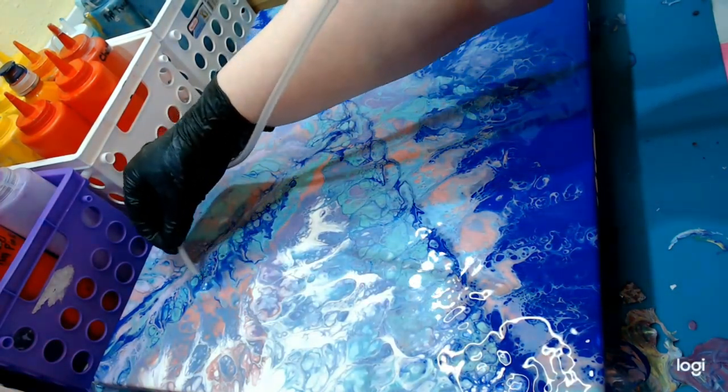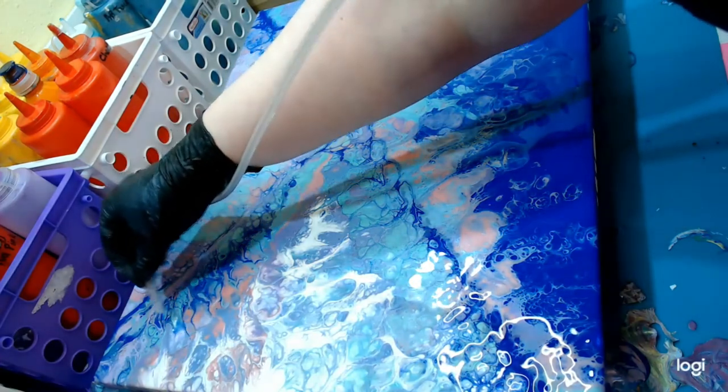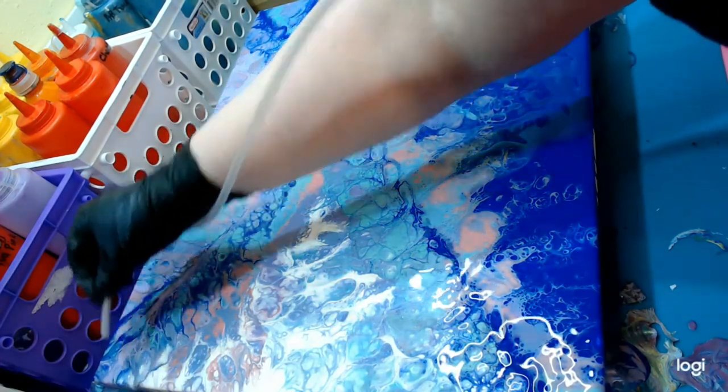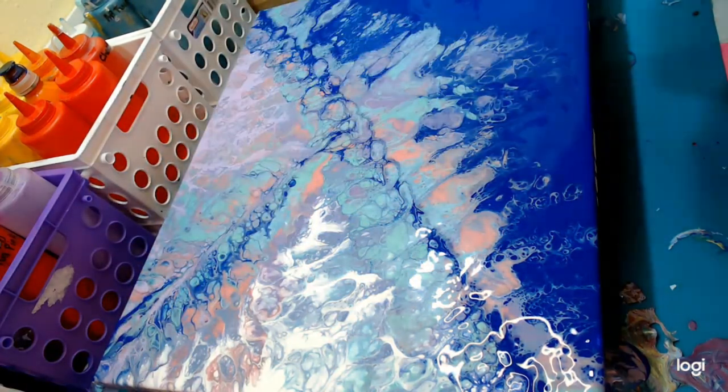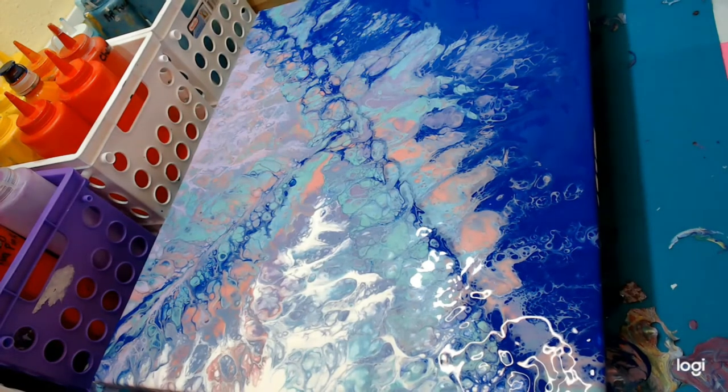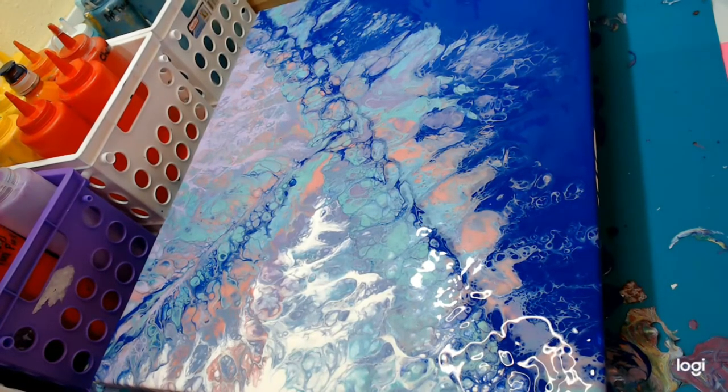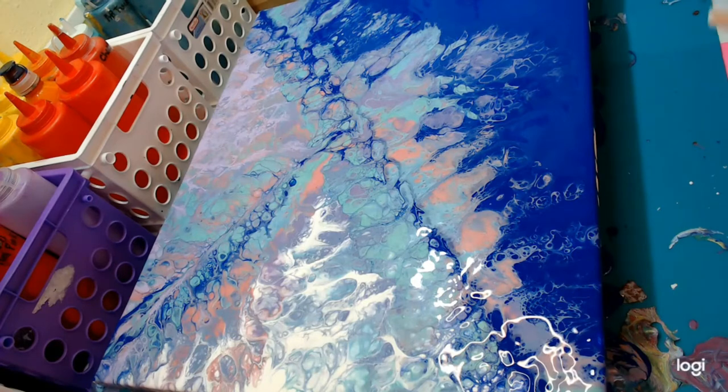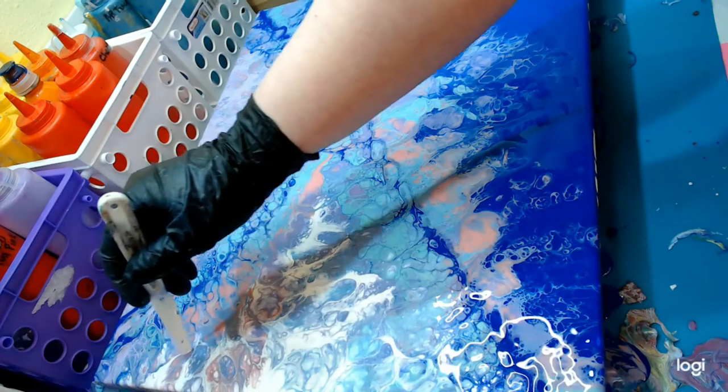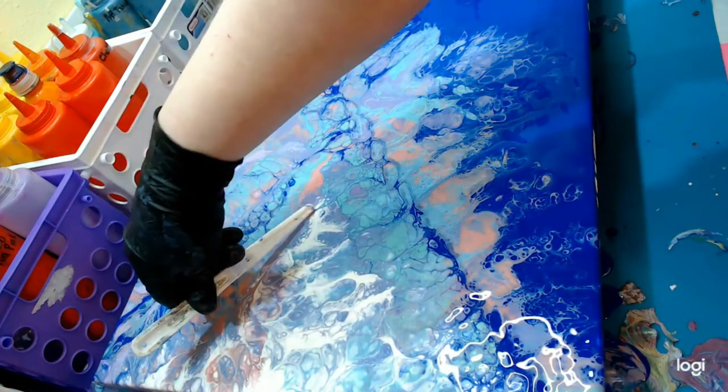Here I'm using a section of aquarium tubing, so you just take a regular old aquarium tubing and I've cut a section off of it. That way I can blow the paint around and have a little bit more control with how I'm blowing the paint around. I've decided I want a little bit more negative space on the white.